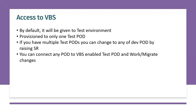To access Visual Builder Studio, it is not provisioned to a production instance. By default, two instances are provided: production and test. Visual Builder Studio comes only for the test environment. Even if you have multiple development and test environments — for example, dev1, dev2, dev3, and test — Visual Builder Studio will come for only one of those non-production environments.